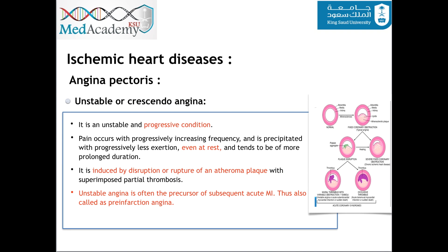Unstable angina is a progressive condition with no relief even at rest. It is induced by disruption or rupture of the atheroma plaque. Unstable angina often comes before myocardial infarction and will lead to myocardial infarction — we call this pre-infarction angina.